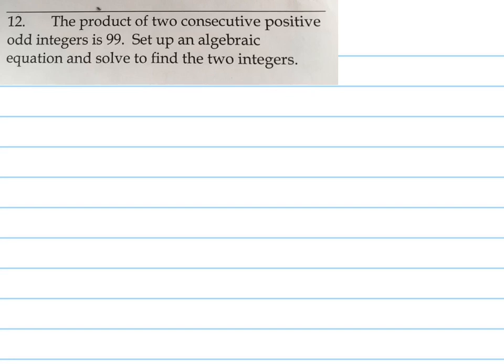I'm going to call the odd integers x and y. Let's call them x and y. The product - that's x times y, not x plus y. It says that the product of them is 99, so I know that x times y equals 99.